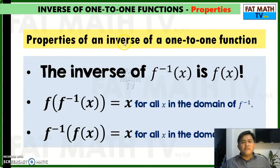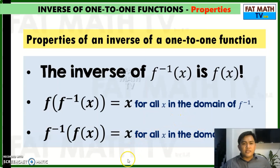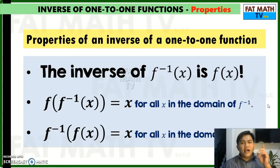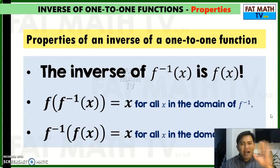So here are the properties of an inverse of a one-to-one function: the inverse of the inverse of f is f; the composition of f and f inverse of x is x; and the composition of f inverse and f of x is also x. Those are the three properties of an inverse of a one-to-one function. That's it for this video. Thank you for watching. Continue making your brains fat. Bye!